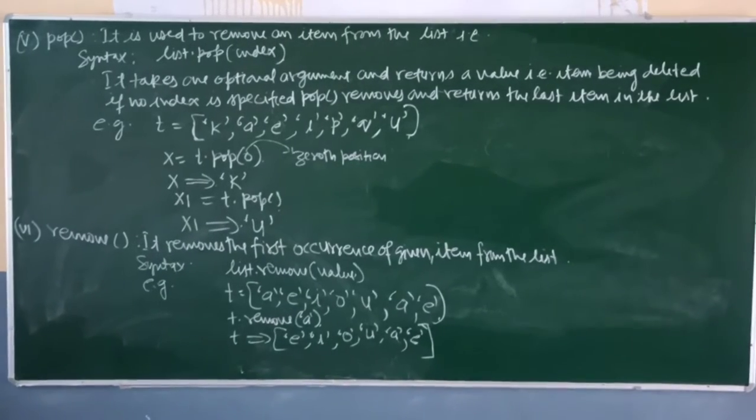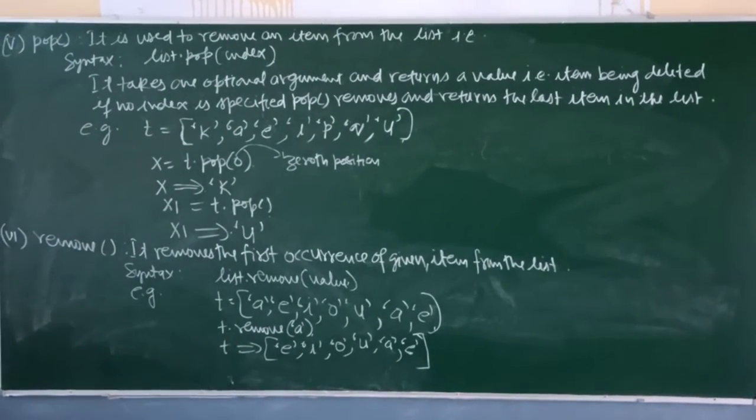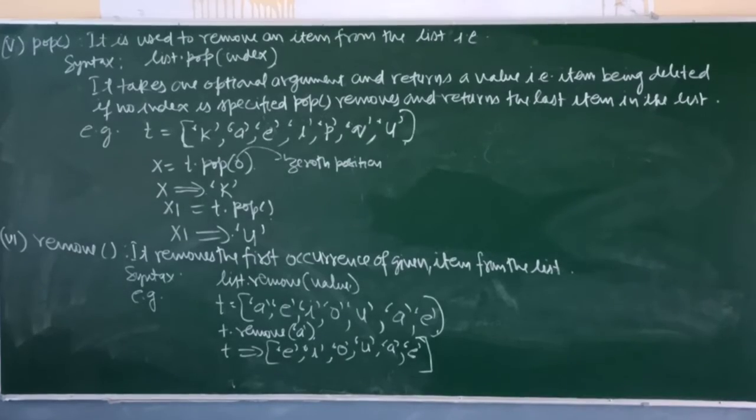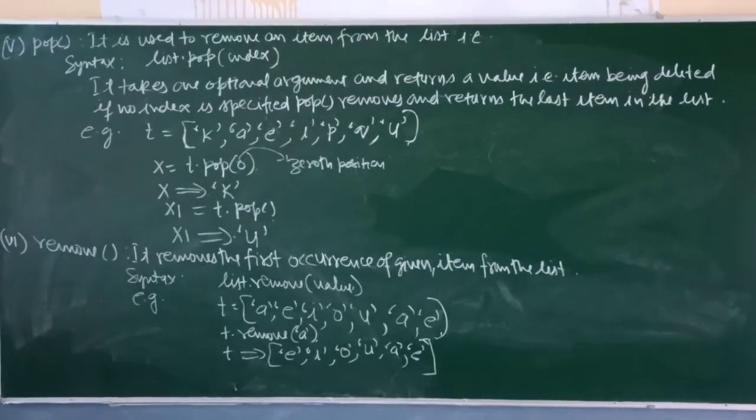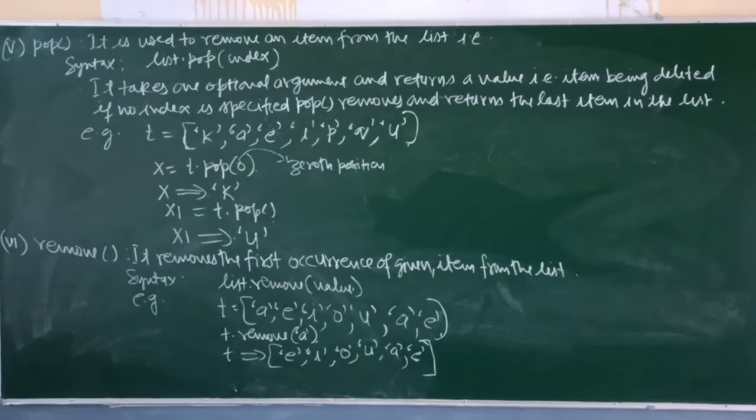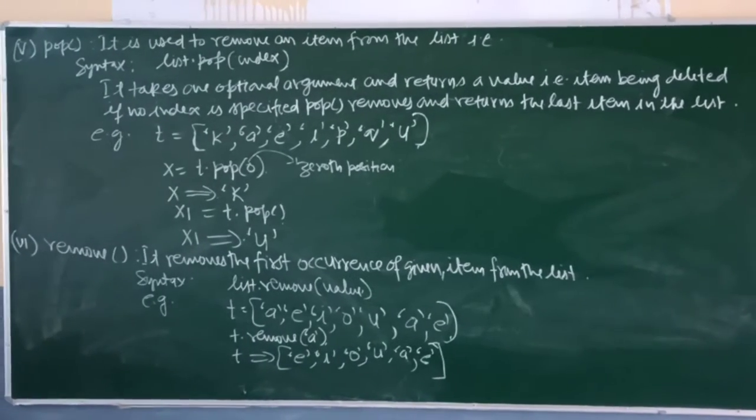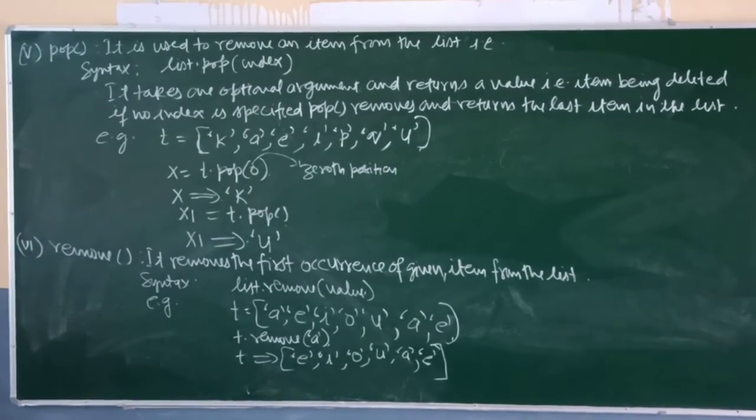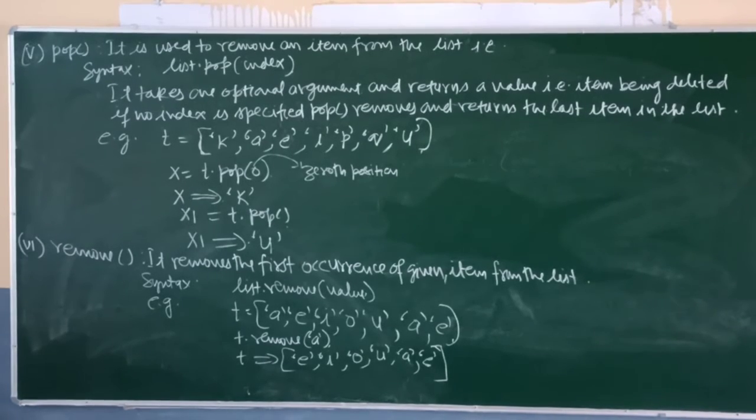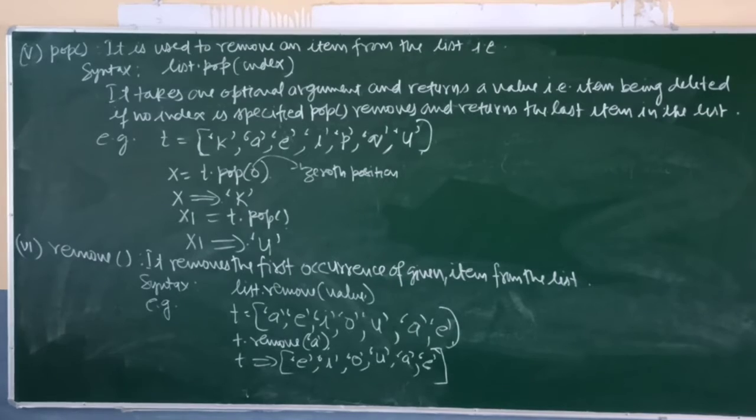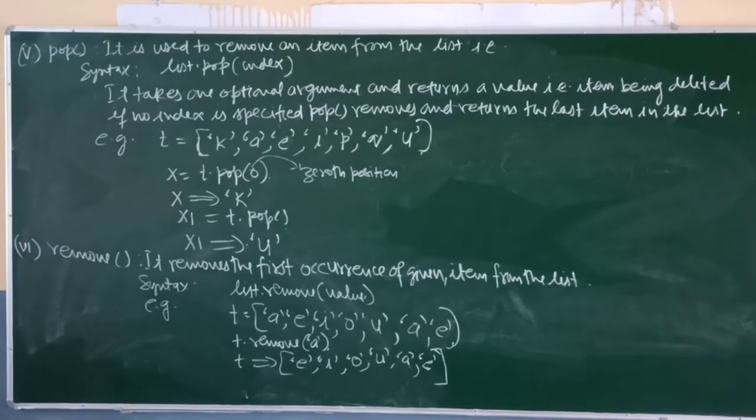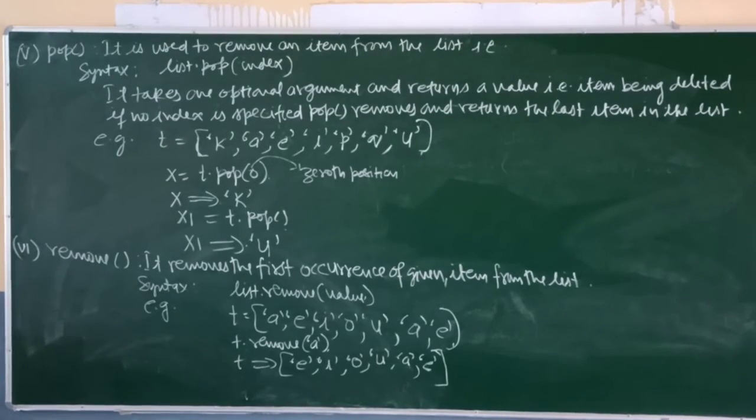Hello students. Another function is your pop function. It is used to remove an item from the list. Its syntax is list.pop inside parenthesis index. It takes one optional argument and returns a value that is the item being deleted. If no index is specified, pop removes and returns the last item in the list.